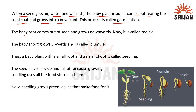The baby root comes out of the seed and grows downward and it is called radicle, whereas the baby shoot grows upward and it is called plumule. Here in this image we can observe the radicle and the plumule.